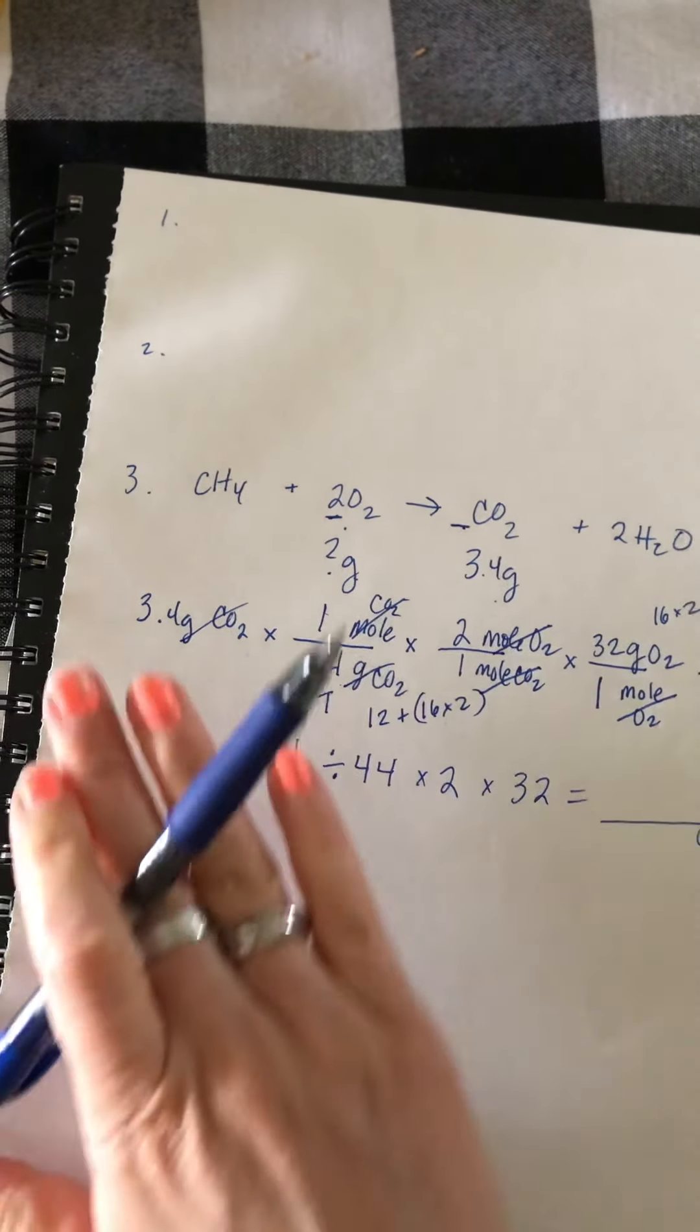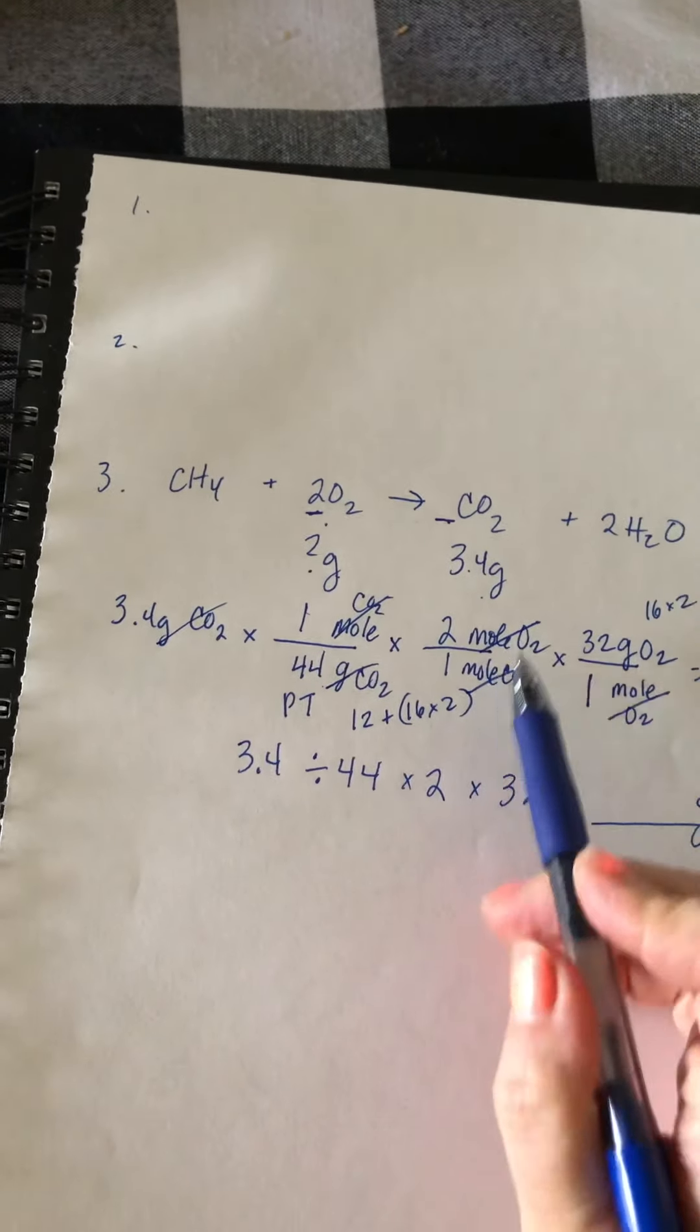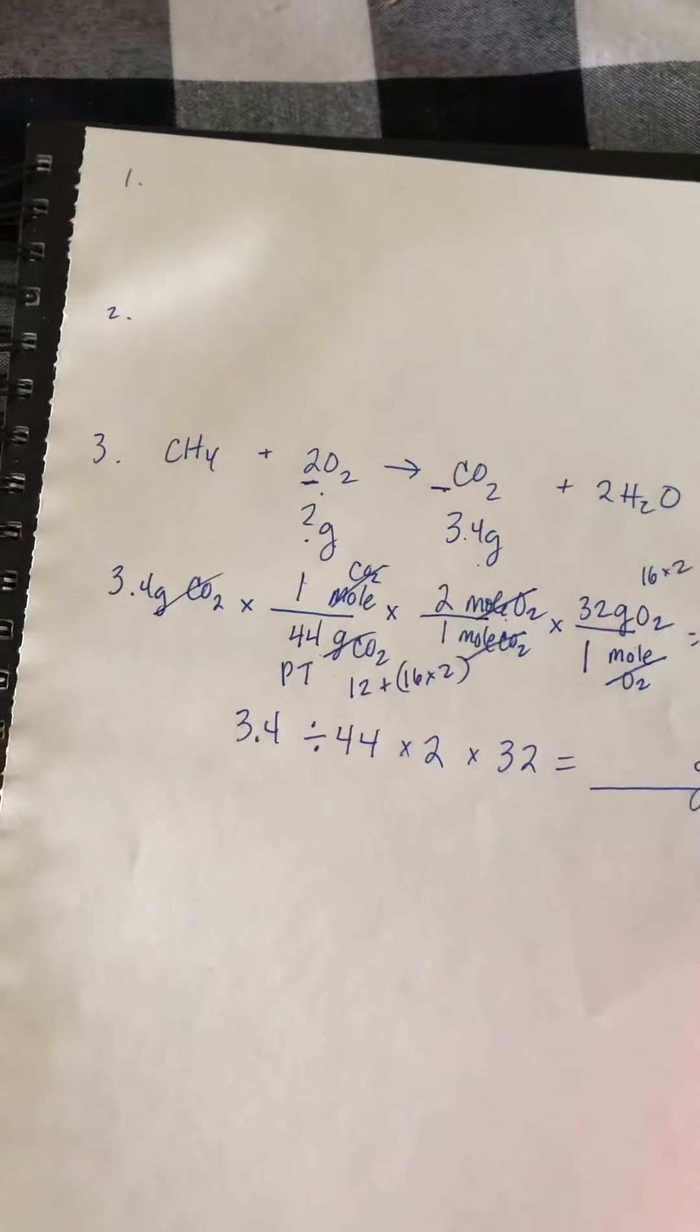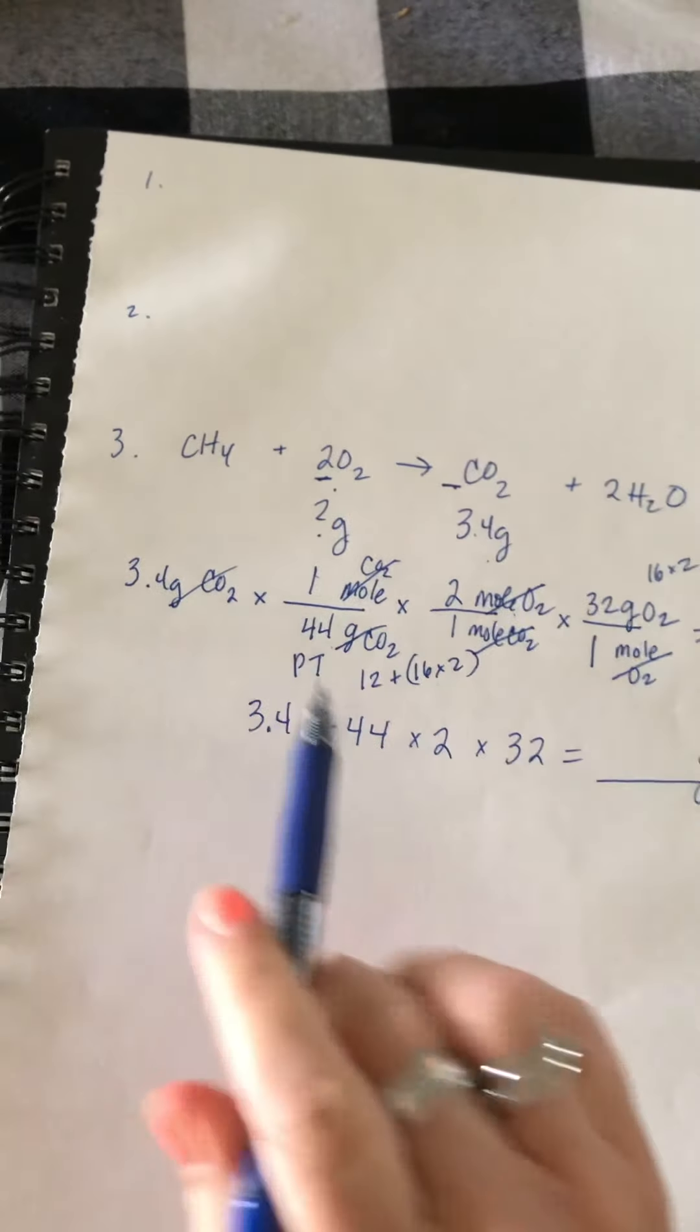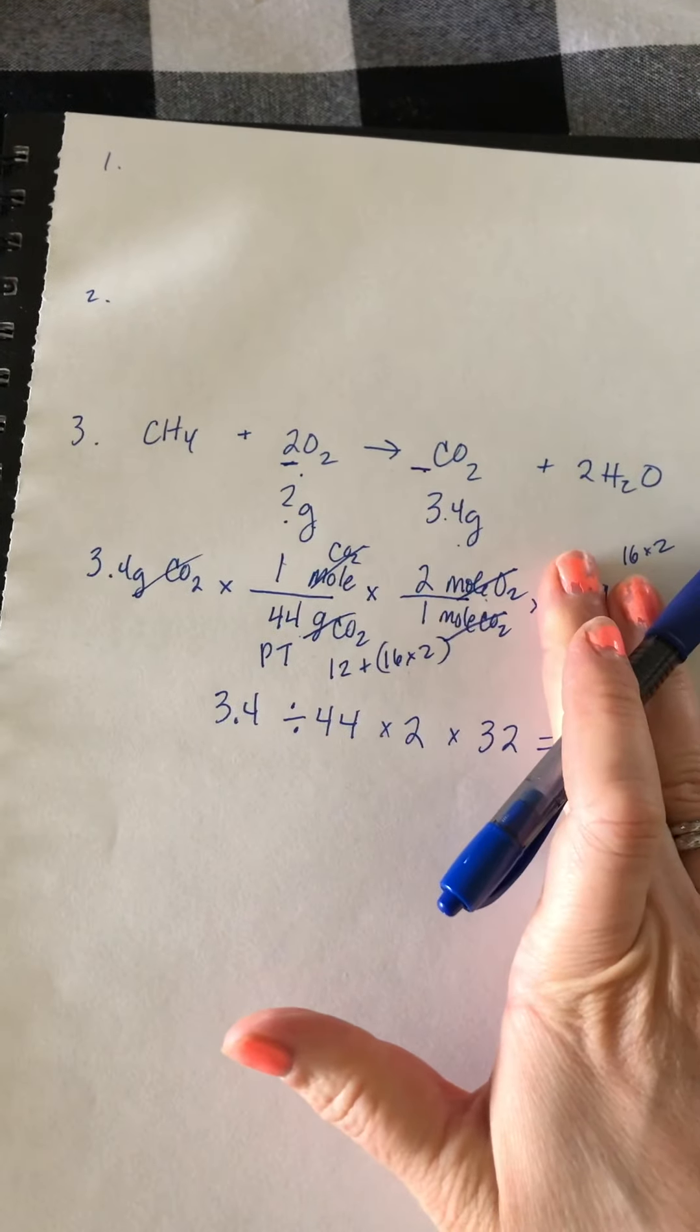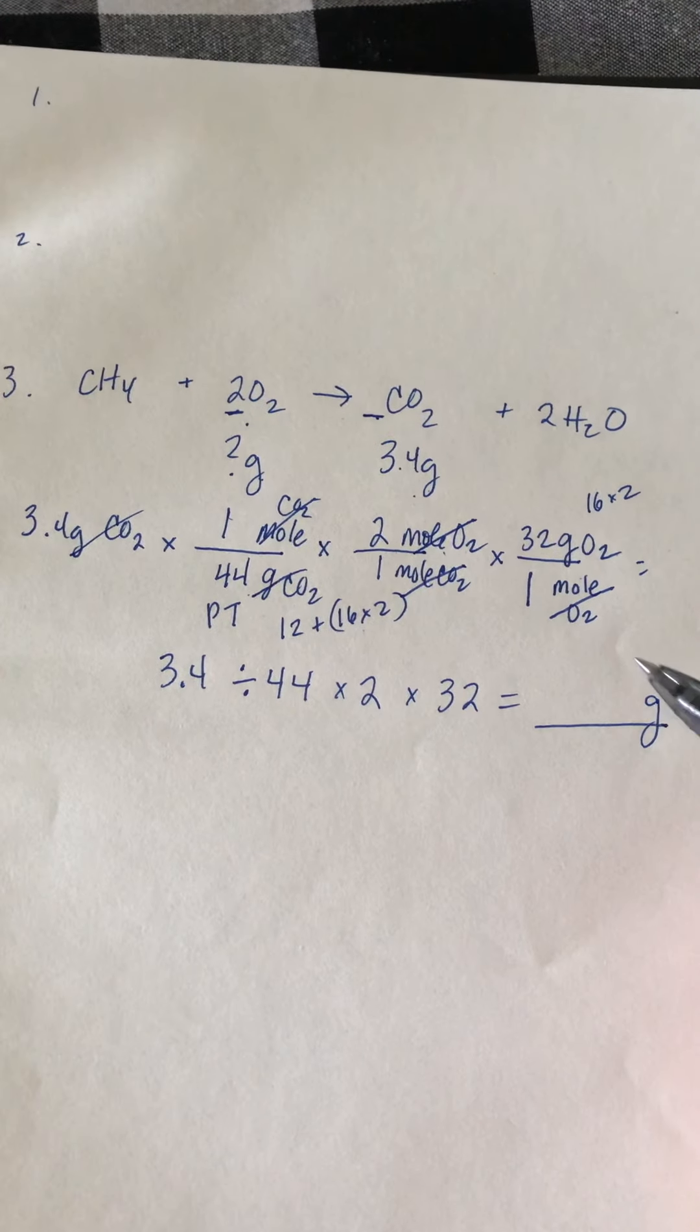If you start with moles and you're trying to find grams, then you're kind of starting right here and then you're just going to multiply by the mole ratio and then multiply by the molar mass. If you start with moles and trying to get to moles, then basically you're just multiplying by the mole ratio. So those are the three types of problems you'll have.